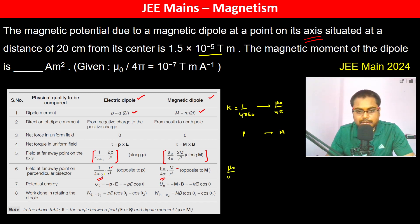μ₀ by 4π into m by r² equals the potential. This is 10⁻⁷ tesla meter per ampere into m divided by r², which is 0.2 meter into 0.2 meter.